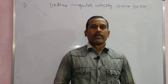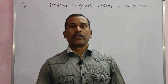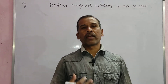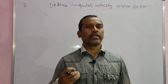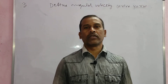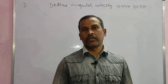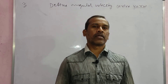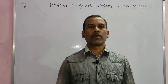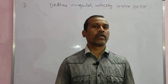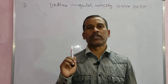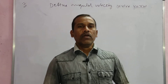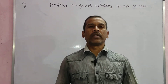Good morning everybody, welcome back to our channel. Today we are going to discuss the relation between linear velocity and angular velocity. This is a four-mark question for TS and AP intermediate public examination - very, very important. It is in your seventh topic: the system of particles and rotational motion. Here, V is equal to r omega.